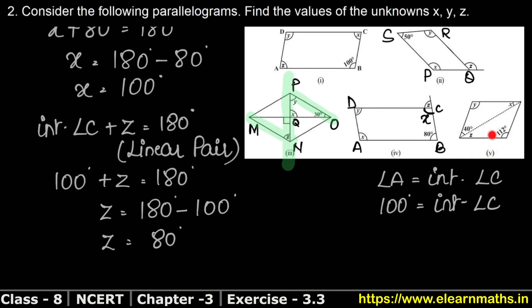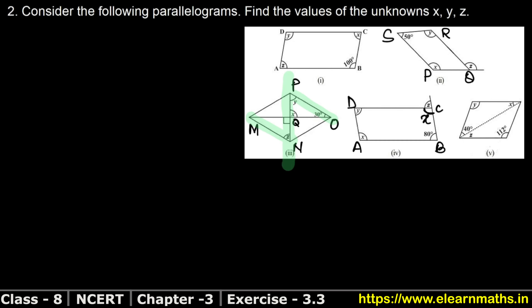Let's do the last part now. This is a parallelogram and we have two triangles formed. So part E — because it is a parallelogram, let's name it PQRS.